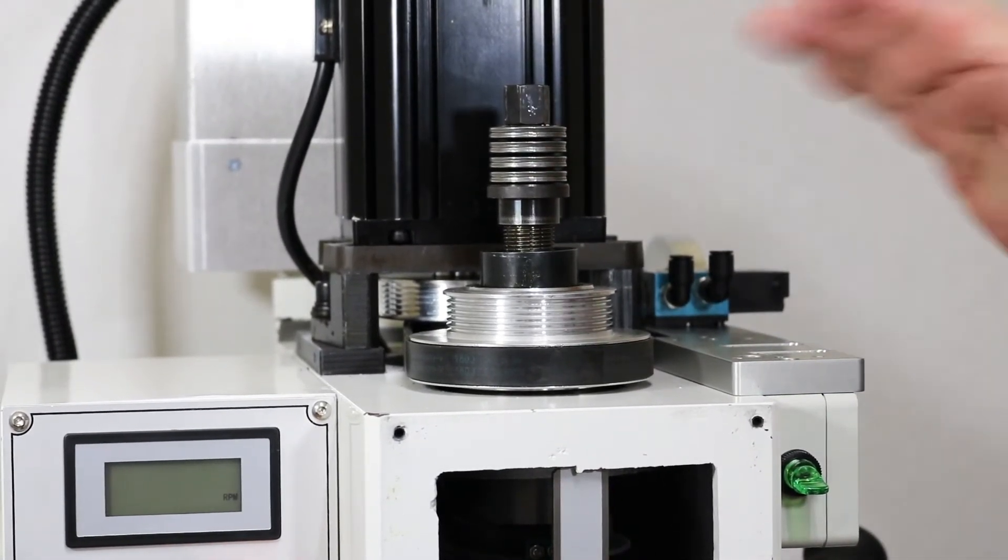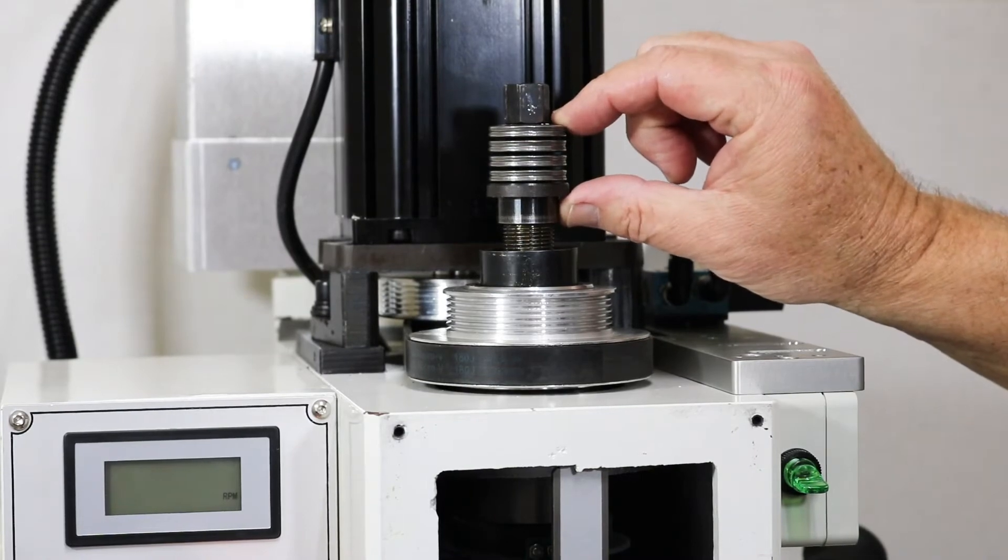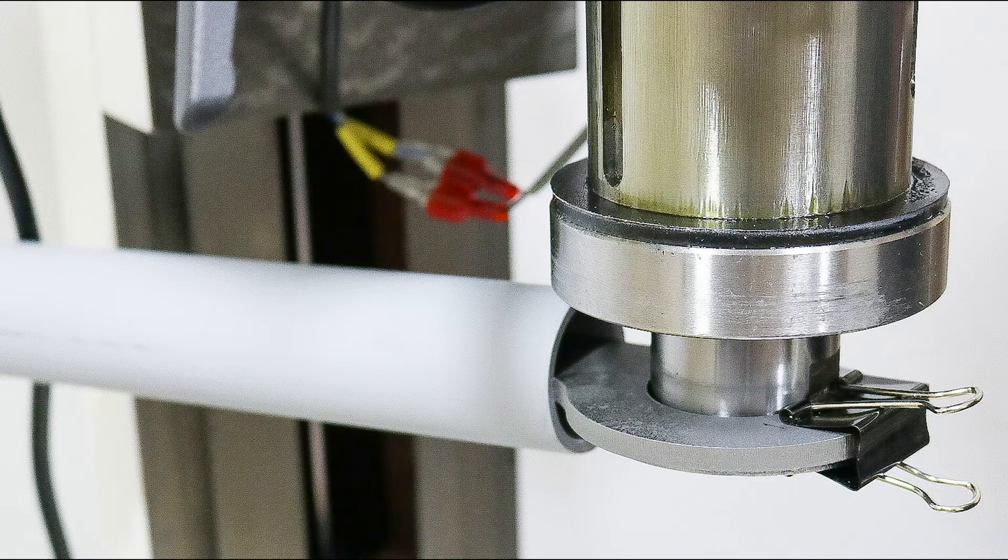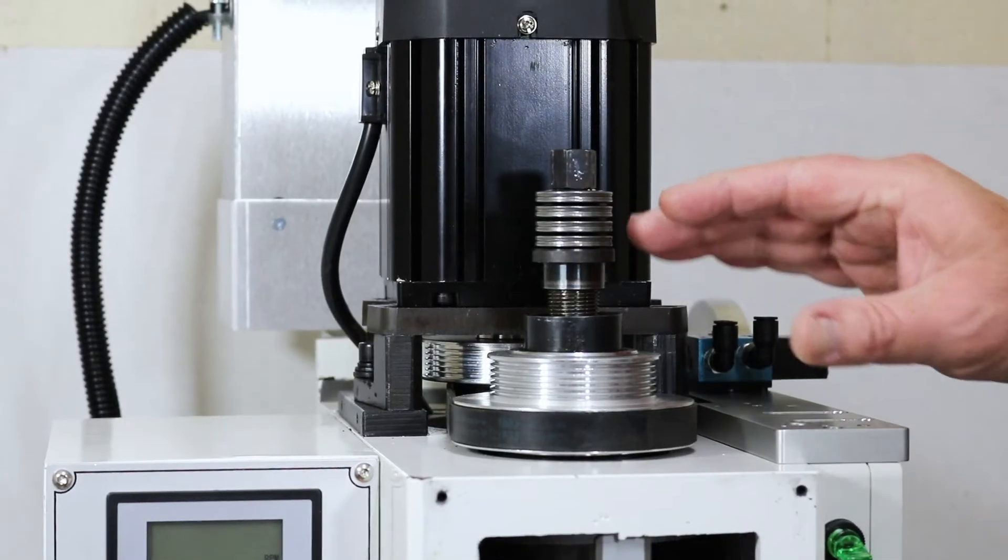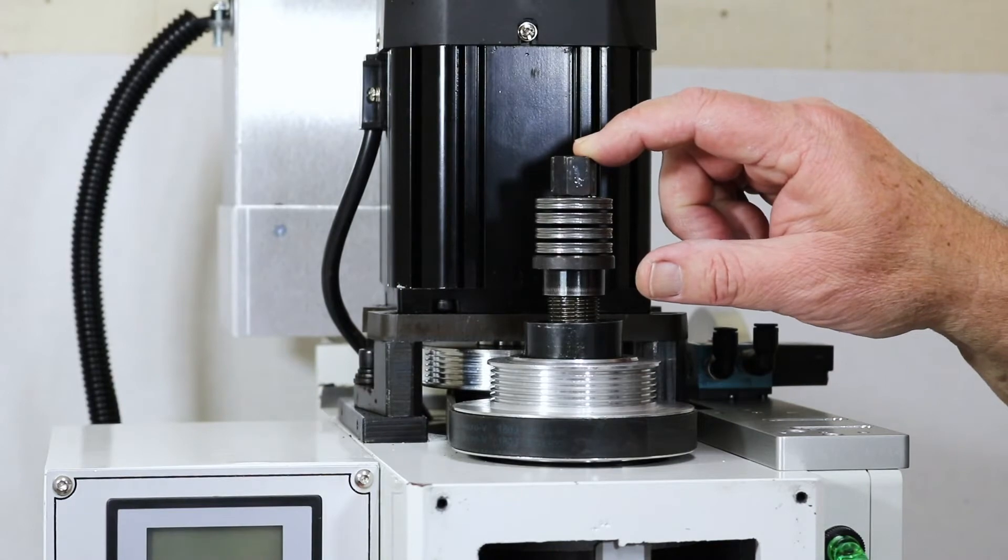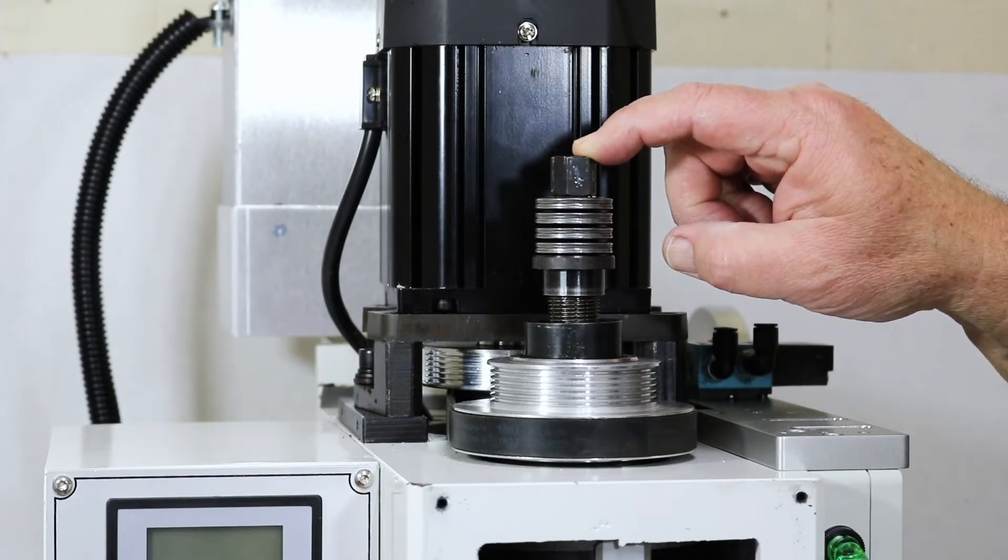We've tightened the drawbar and compressed the Belleville stack, thereby putting tension on the collet holding the tool. At this point, with one revolution of the drawbar, we're now going to assemble the rest of the system to check the function of the power drawbar.